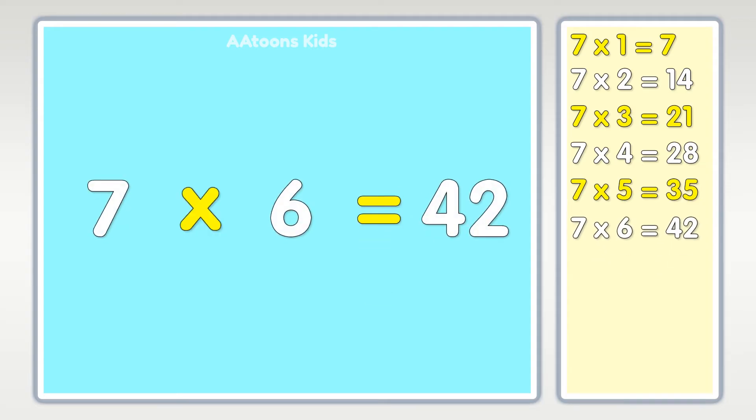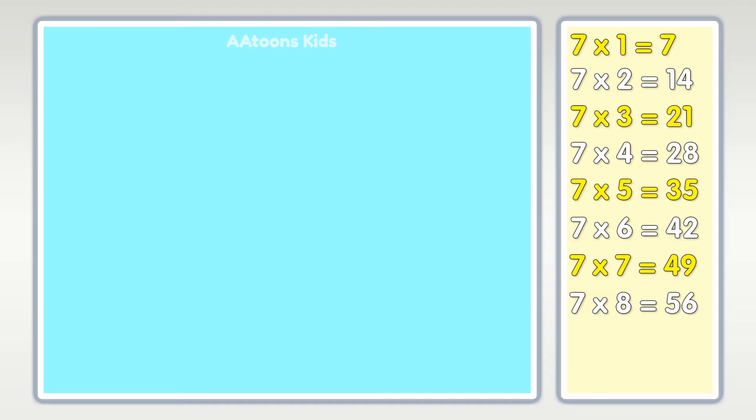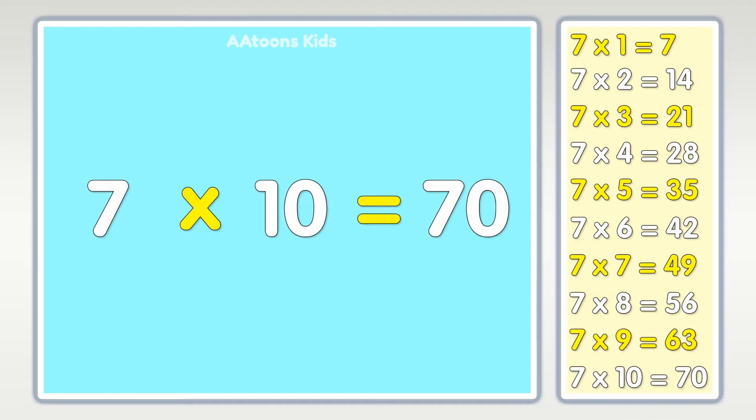Seven times seven is forty-nine, seven times eight is fifty-six, seven times nine is sixty-three, seven times ten is seventy.